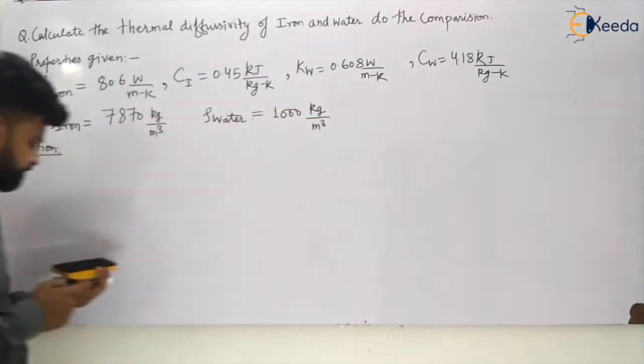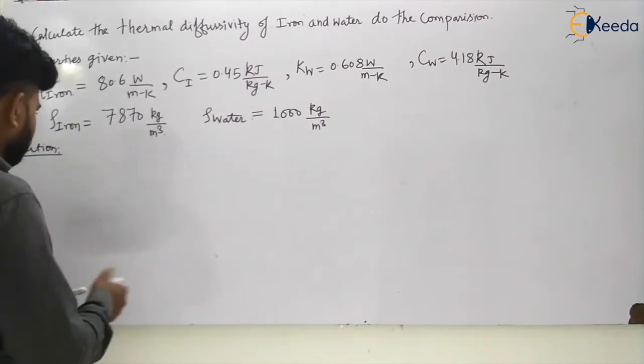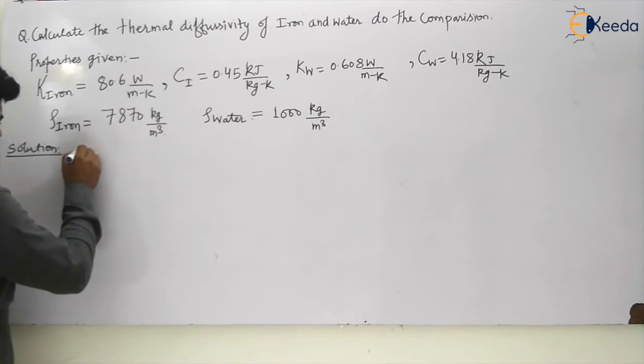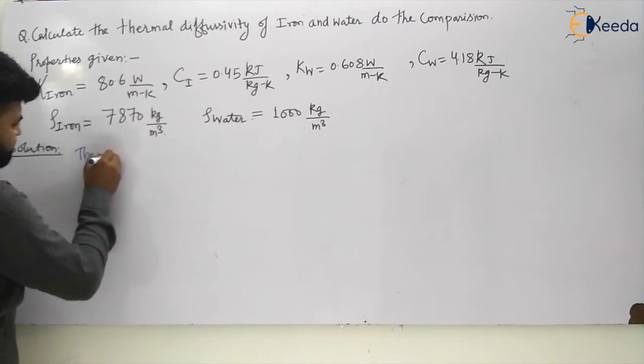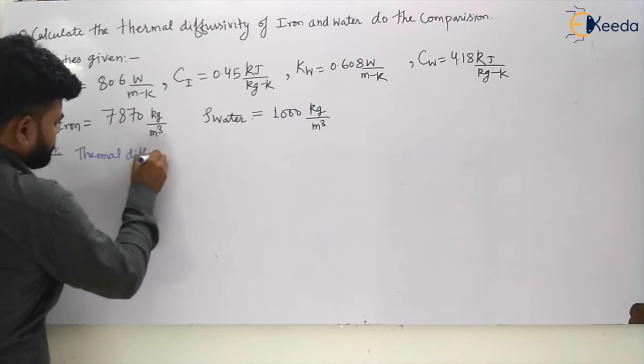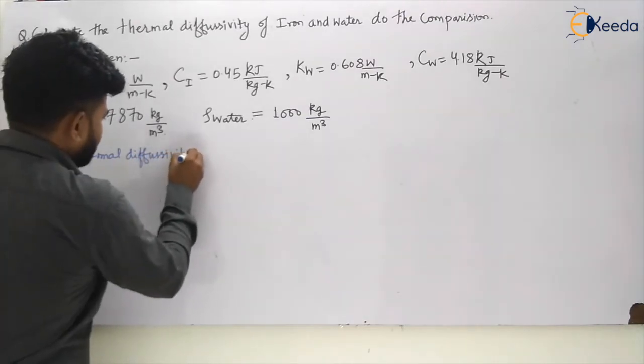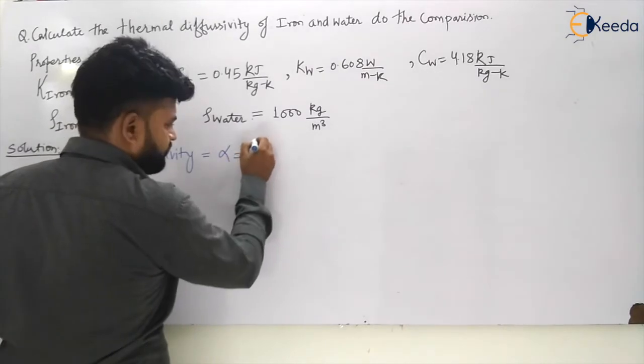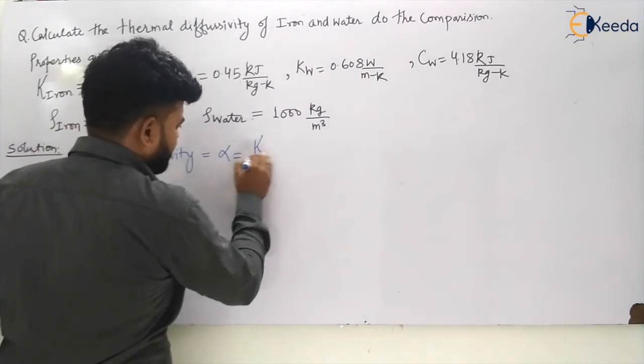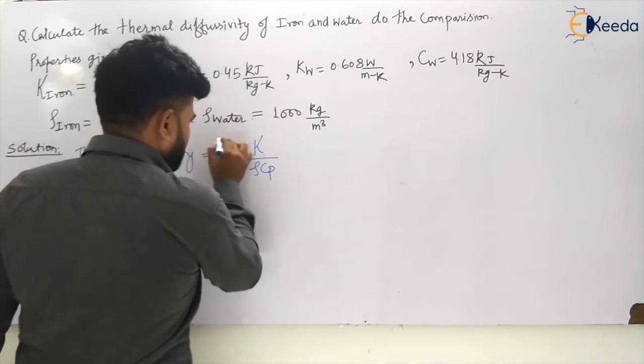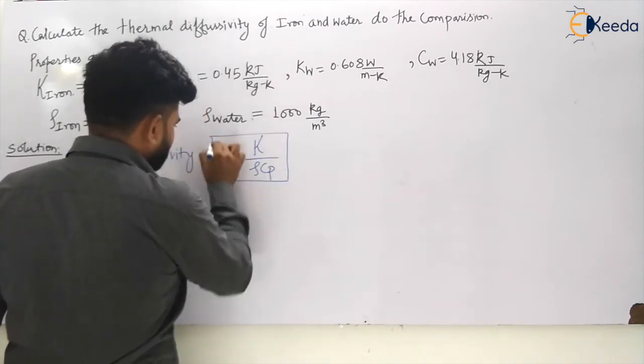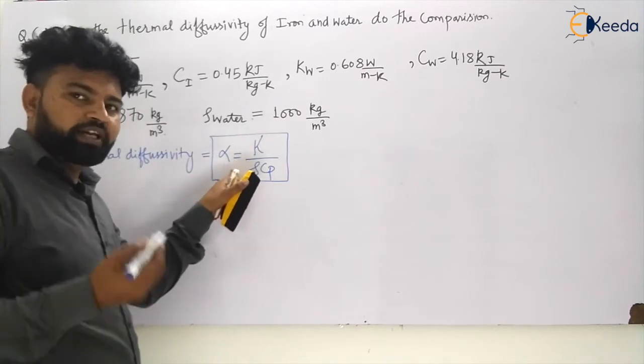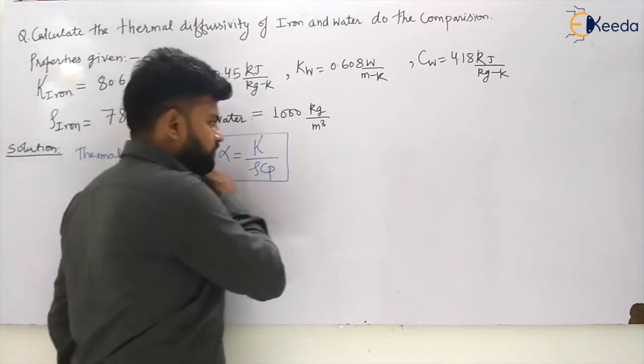So guys, let us see. What is thermal diffusivity? Thermal diffusivity is given by alpha equals k by rho cp. That is heat conducted in the material to the heat ability to store heat inside the material.